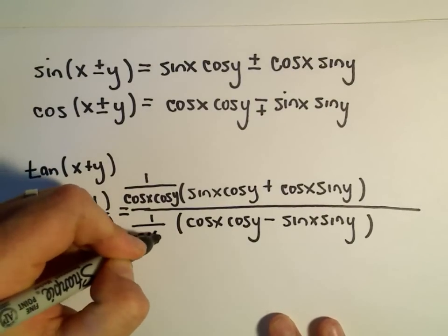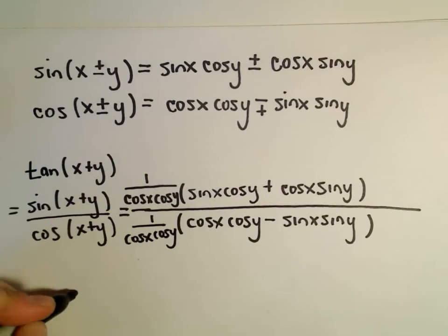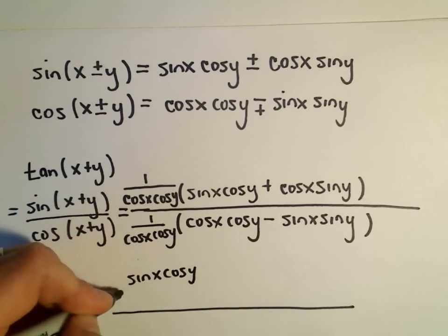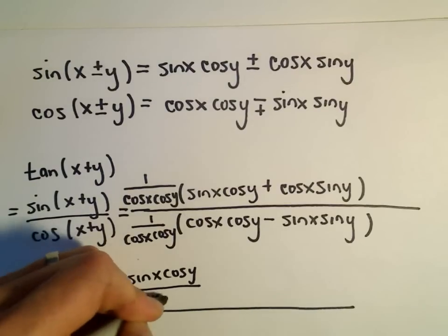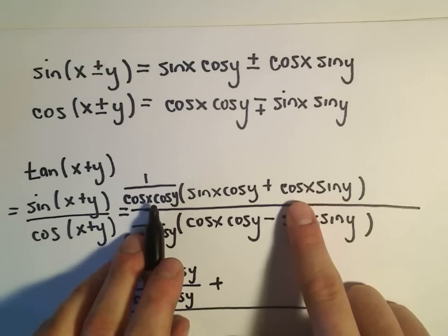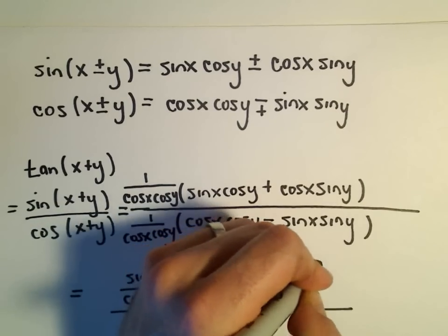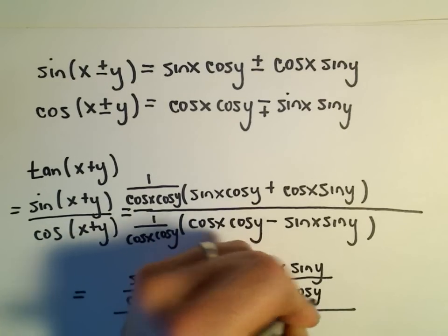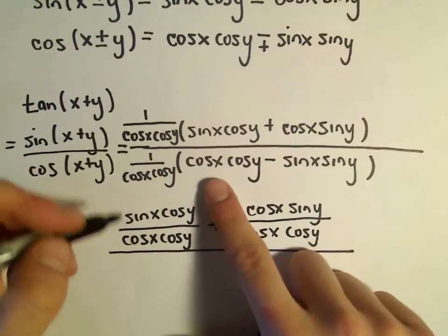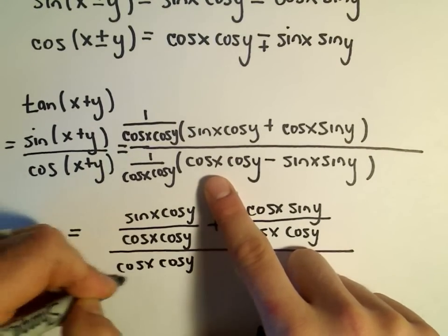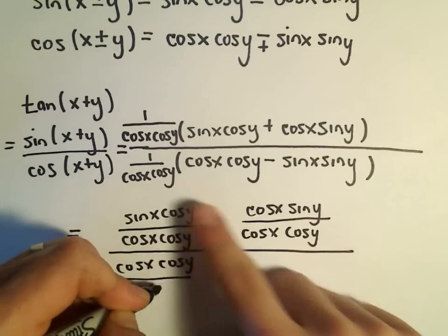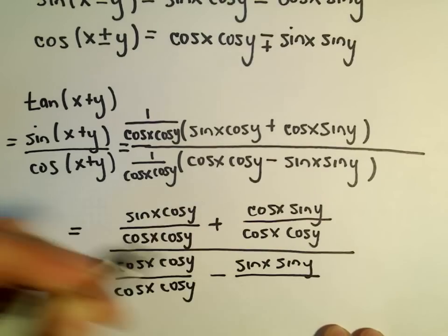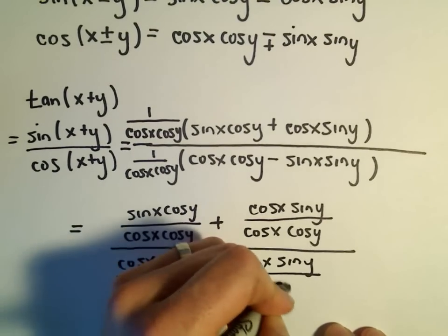We've got to do the same thing to the denominator: one over cosine x times cosine y. So if we distribute, we would have sine x cosine y over cosine x times cosine y, plus when we distribute again we'll have cosine x sine y divided by cosine x cosine y. And we'll do the same thing in the denominator: cosine x cosine y over cosine x times cosine y, minus sine x sine y over cosine x cosine y.